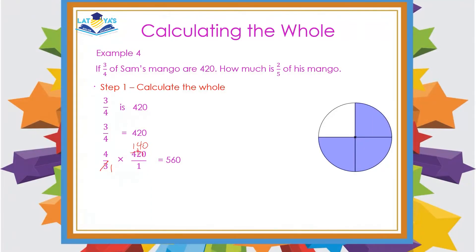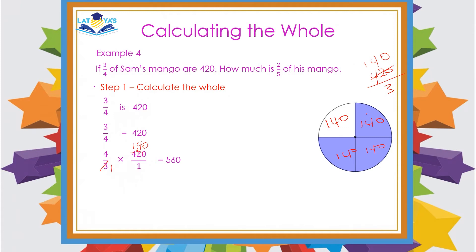Using a fractional model: they told me 3 quarters of his mangoes are 420. So I can divide 420 by 3 to determine how much is 1 quarter — that's 140 for each quarter. And if I multiply 140 by 4, I would know how much is all of his mangoes, which is 560.